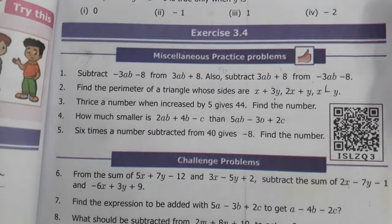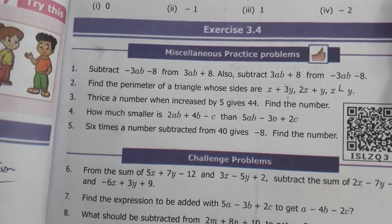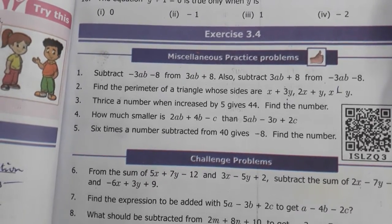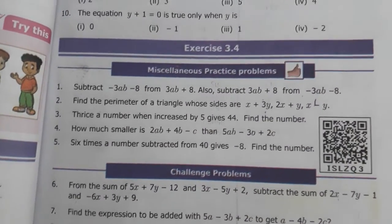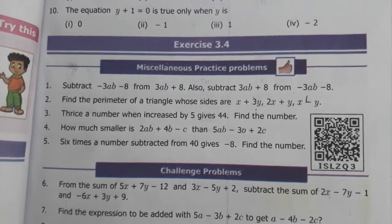Next is the third question. Thrice a number when increased by 5 gives 44. Find the number. Thrice a number, when increased by 5, gives 44.